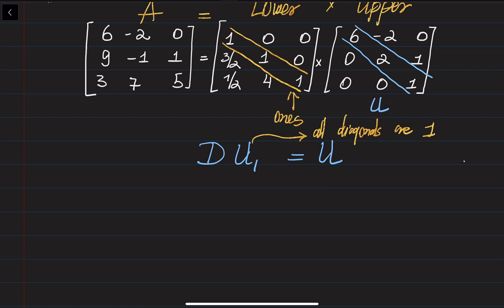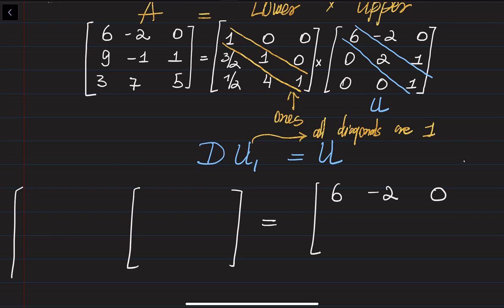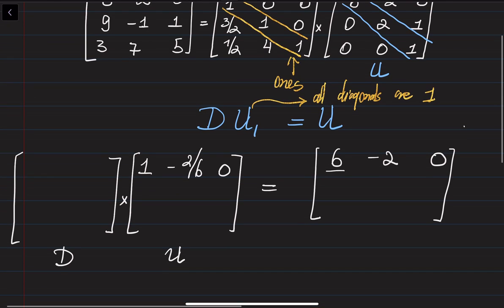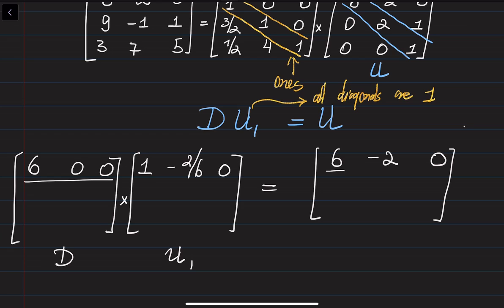Let me write down this matrix: six, minus two, zero. If I want the diagonal entry six to be equal to one, I just need to divide everything by six, giving one, minus two over six, and zero. But remember, the diagonal matrix multiplies the rows of your matrix by that constant. So since you are dividing everything in the first row by six, you have to compensate in another matrix — essentially taking out the constant six from all entries of the corresponding row.